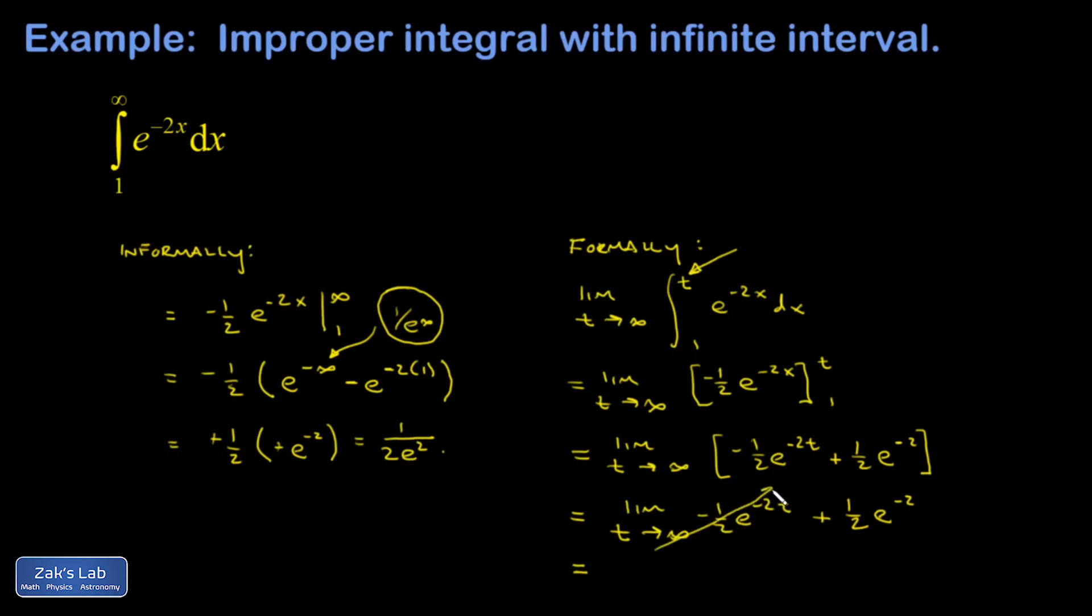I still need to know that that limit is zero, and I end up with 1 over 2 e squared.